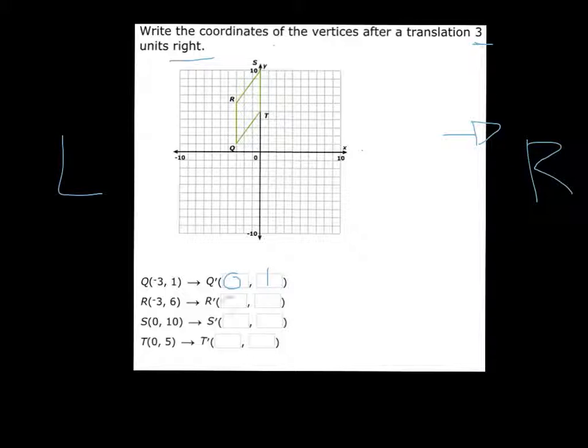R will be 0, 6, moving this way. S will be 3, 10 and T will be 0, 5. So that's how you do Translation.